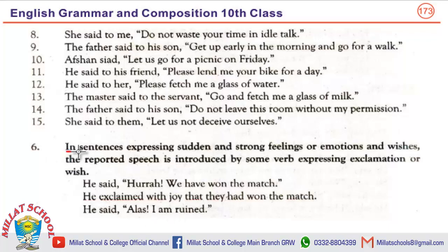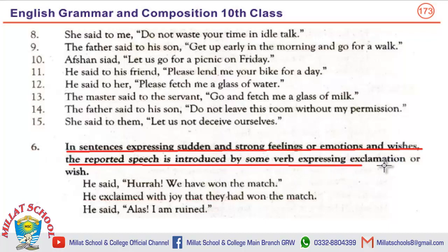Rule six: in sentences expressing sudden and strong feelings or emotions and wishes, the reported speech is introduced by some verb expressing exclamation or wish. یعنی exclamatory sentences آگئے — exclamatory sentences: a sentence that expresses some strong but sudden feelings or sentiments — sadness, happiness, surprise etc. یعنی ایسا جملہ جس میں شدید مگر اچانک جذبات ہوں، چاہے وہ غم کے ہوں، خوشی کے ہوں، تعجب کے ہوں — وہ exclamatory sentence کہلاتا ہے۔